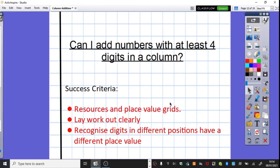So today, we're going to be doing some recapping and probably quite some familiar work on our column addition. We're going to be working through column addition and different strategies for adding and subtracting over the next couple of days to build up to some problem solving. So today, we are looking at adding numbers in a column with at least four digits.